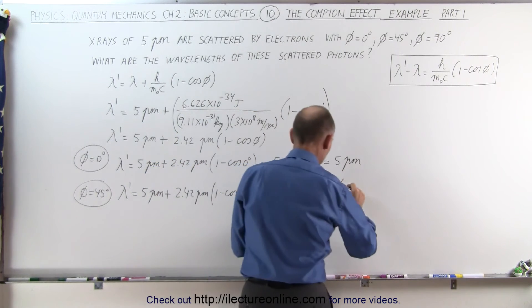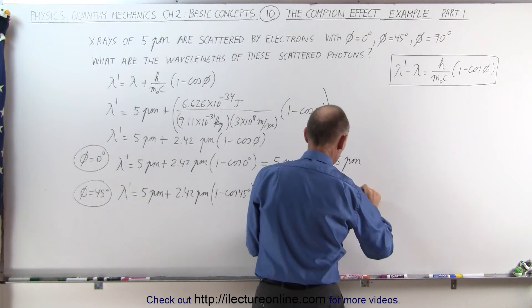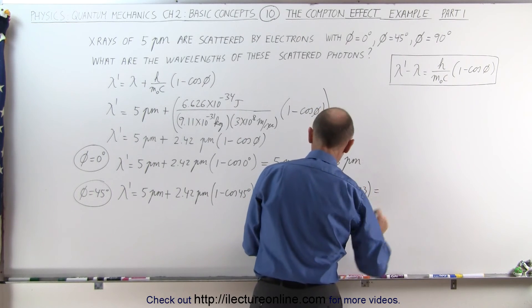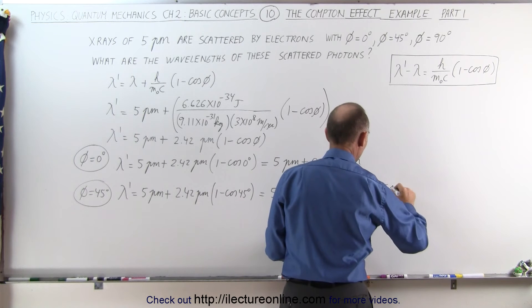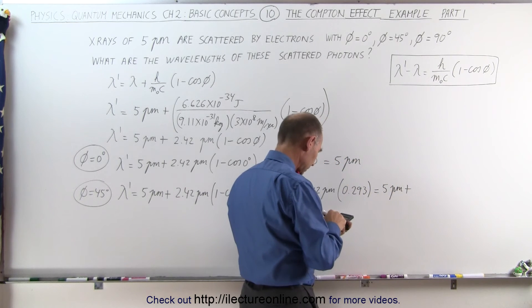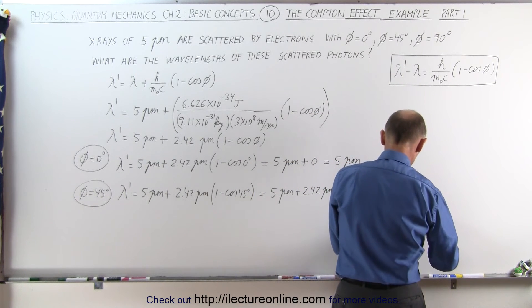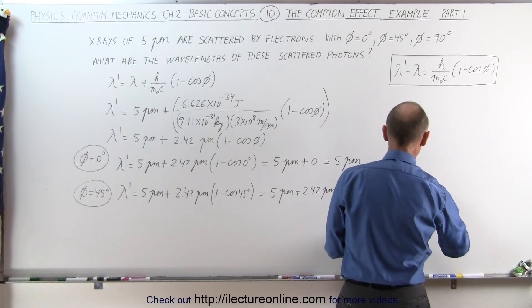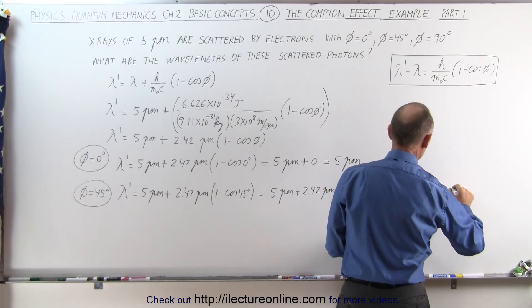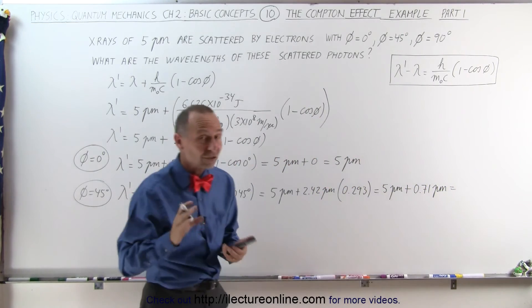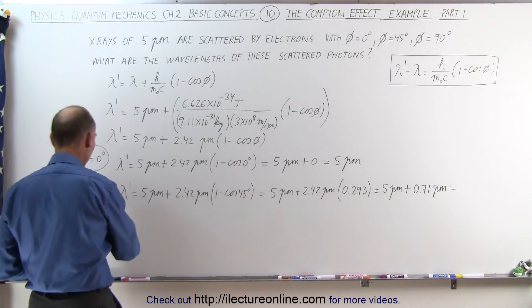That would be 0.293, which is equal to 5 picometers plus 0.71 picometers, which means that the wavelength of the scattered photons, the ones that are scattered at 45 degrees, are now going to be 5.71 picometers.